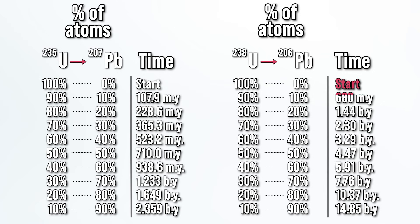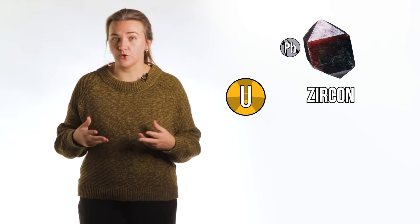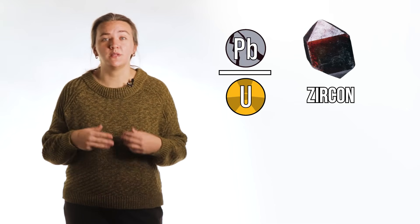It takes 4.47 billion years for half of the uranium-238 atoms to decay to lead-206, but only 710 million years for half of the uranium-235 atoms to decay to lead-207. One tiny mineral that is widely used to date crystalline rocks is called zircon. The ratio of uranium to lead in zircon can be used to determine the age of the rock.